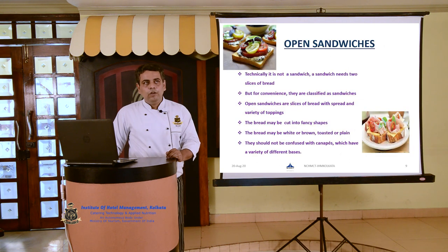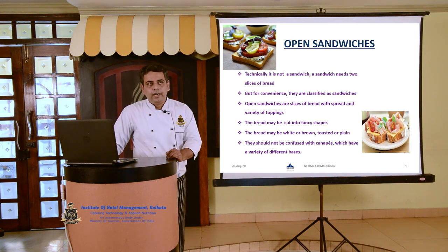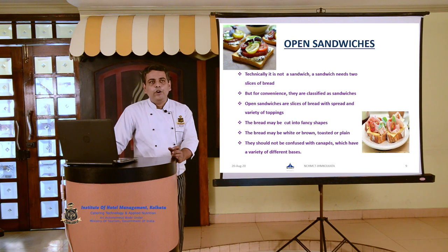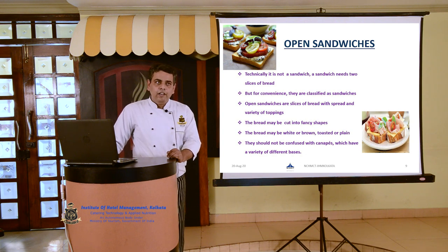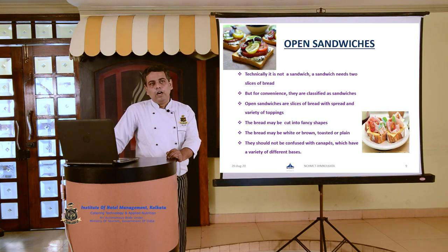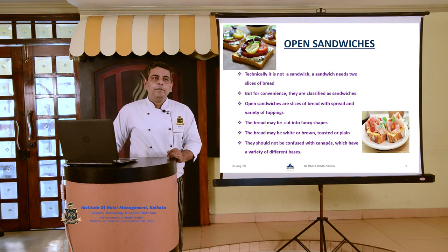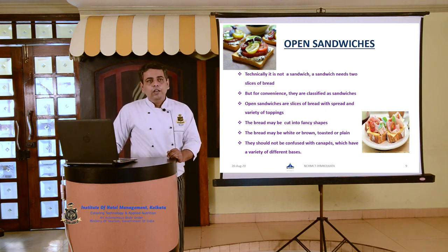The next category is open sandwich — one of the most popular and eye-appealing sandwiches in the world. As per definition, an open sandwich is not technically a sandwich, since a sandwich needs at least two slices of bread. But for convenience, they are classified as sandwich. Open sandwiches are made with slices of bread with butter spread on top, along with different kinds of filling. Since the sandwich is served open, it is very important that the filling be neatly arranged with a proper garnish of prime quality, so that it looks more attractive and eye-appealing. The bread may be white or brown, toasted or plain. It should not be confused with the canapé because a canapé is made with a different base, but an open sandwich is always made with a bread base.